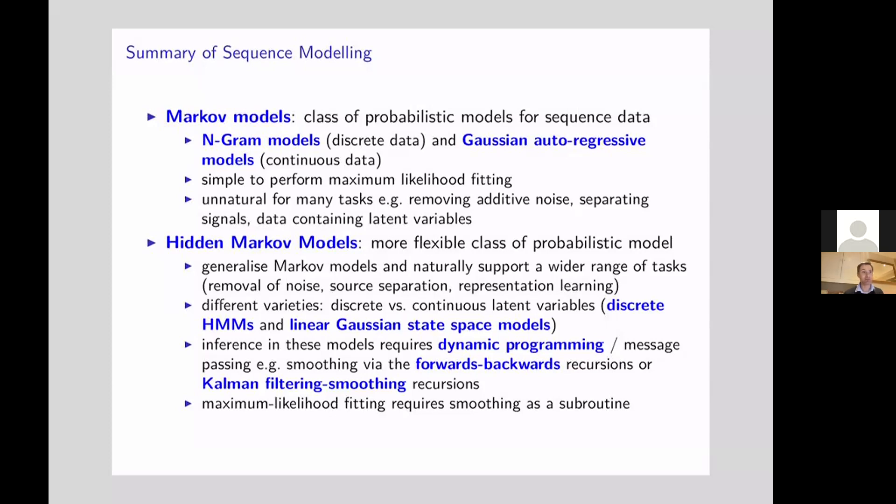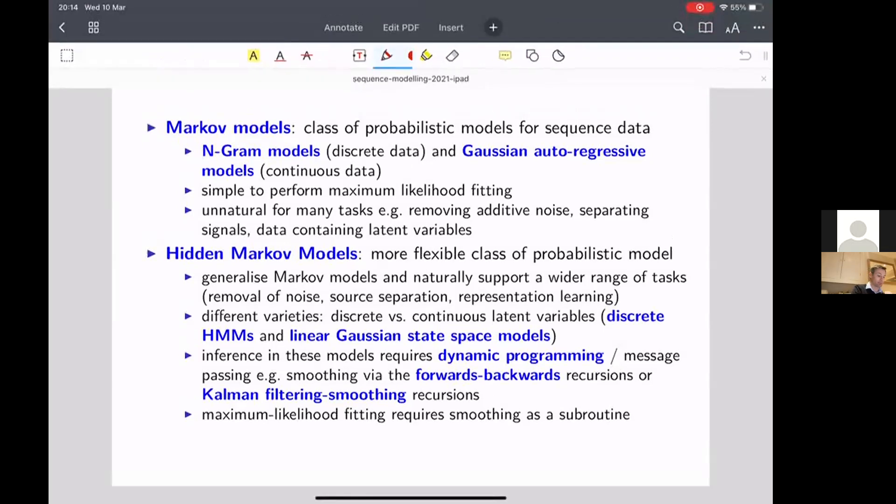These models are very easy to fit. Maximum likelihood fitting is straightforward because the likelihood is available in a nice closed form, but they are unnatural for many tasks. For instance, if you want to remove noise from a signal or separate signals or your data contains latent variables, these are not the most natural way of going about it.